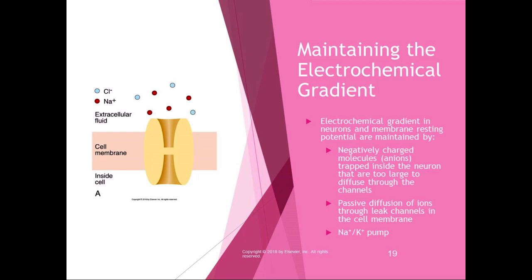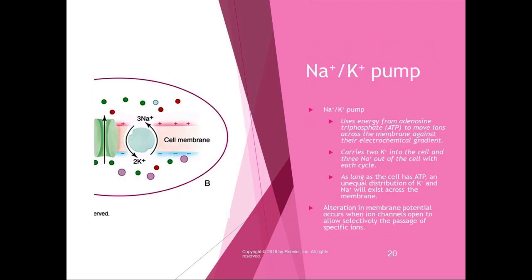The resting membrane potential and the electrochemical gradient are maintained by the sodium-potassium pump, negatively charged molecules trapped inside the cell due to their size, and passive diffusion of ions through non-gated ion channels. The pump uses energy from ATP to move ions against the electrochemical gradient, carrying two potassium into the cell and three sodium out with each cycle. As long as the cell has ATP, it can maintain that unequal distribution of potassium and sodium.